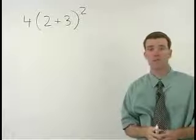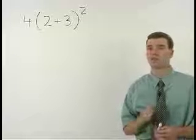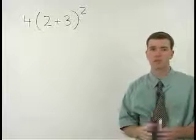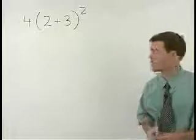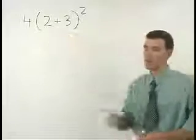When you have a set of parentheses in an order of operations problem, you must simplify what's inside that set of parentheses first before you do anything else. So our first step here is to add 2 plus 3, which gives us 5.